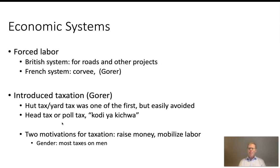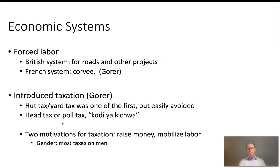Taxation had a twofold purpose: to raise money for government, and secondly to force people to work — to mobilize labor. There's a gender dimension here: most taxes were directly on men, partly because Europeans were sexist and considered men head of the household, but also because they mostly wanted to mobilize men to work. In addition to taxation, as Guerrera also discusses, you had forced labor. In the British system that was usually for public works like roads, and once roads were established forced labor was largely eliminated.